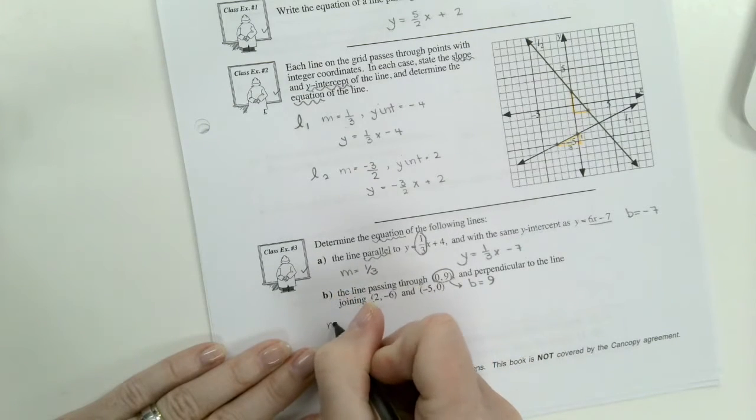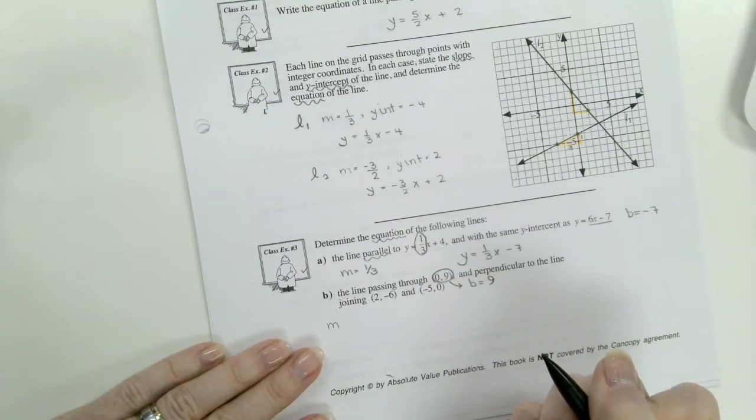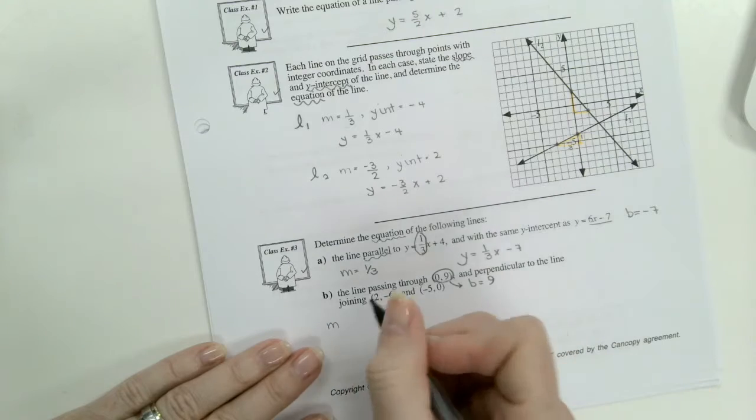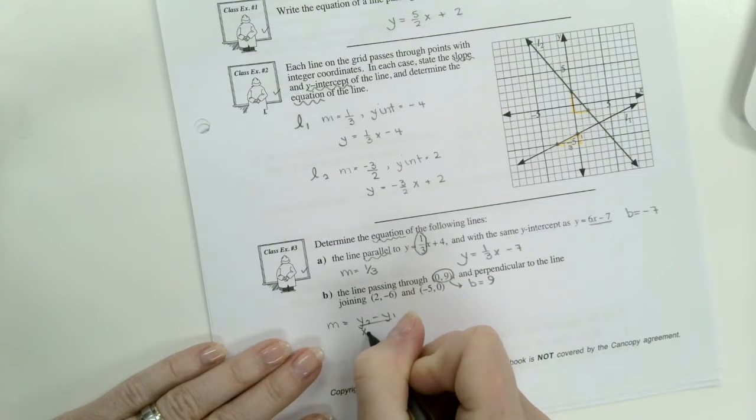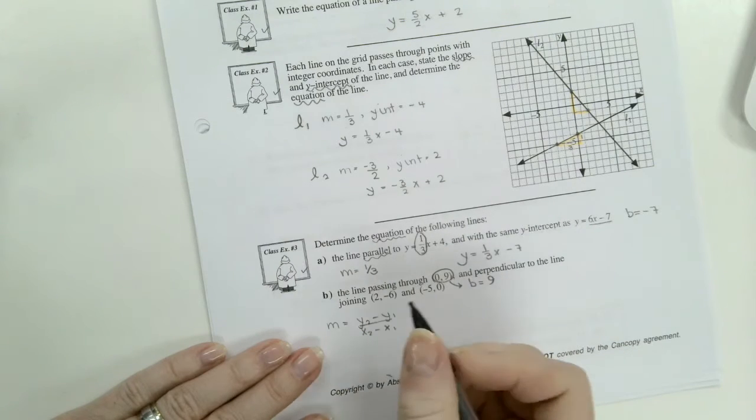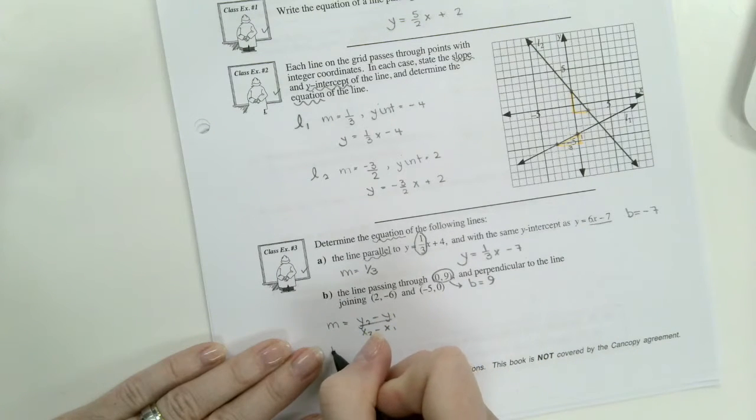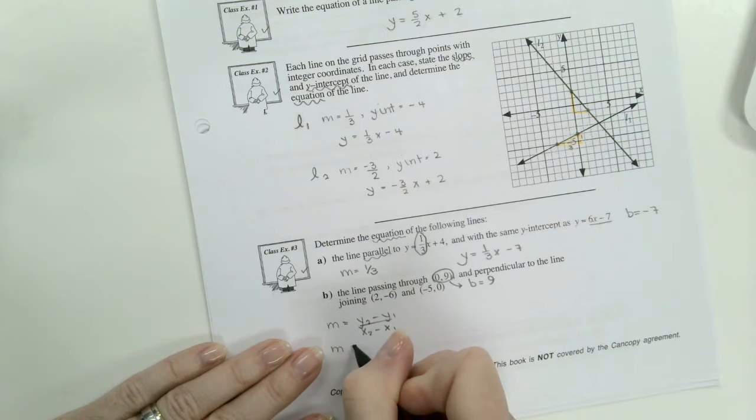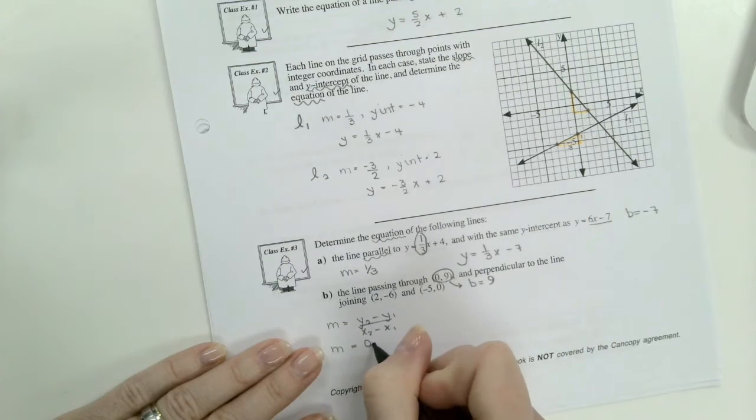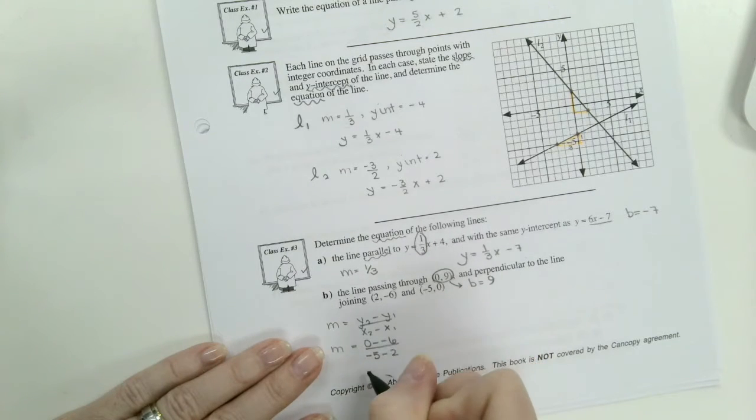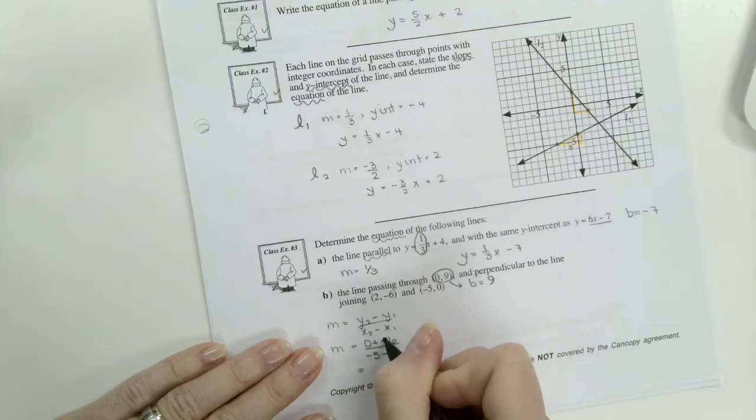And perpendicular to the line joining these two points. So we'll need to find our slope first. And then we will have the negative reciprocal slope because it's perpendicular to that line. So m equals y2 minus y1 over x2 minus x1. And yes, write your equation every time. m equals y2, so 0 minus minus 6 over negative 5 minus 2 equals.